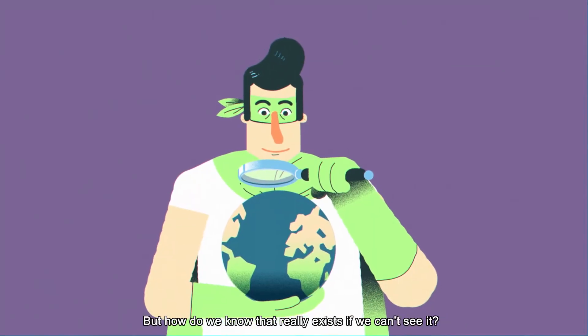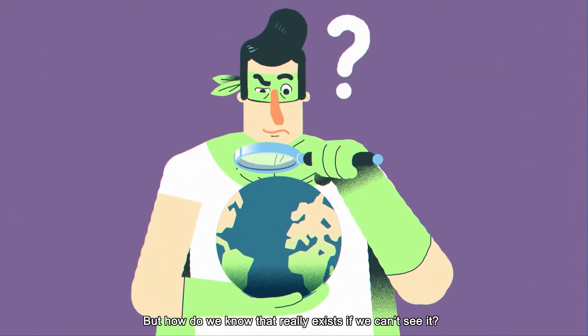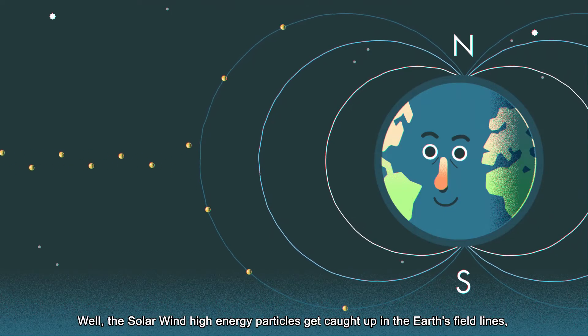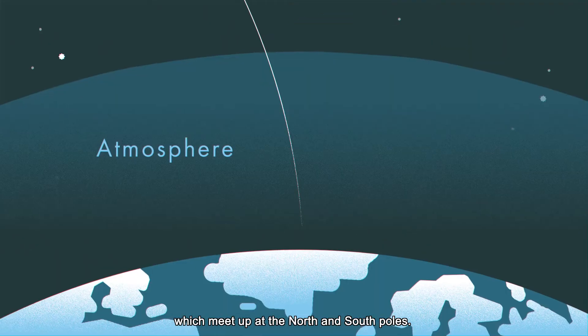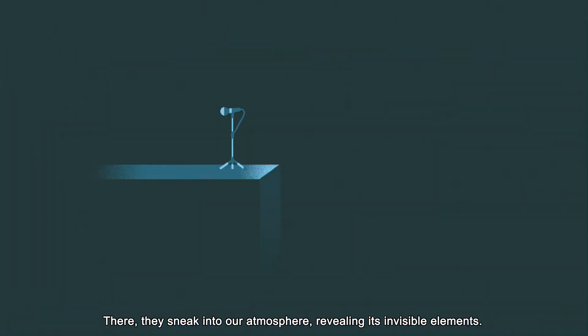But how do we know that really exists if we can't see it? Well, the solar wind high energy particles get caught up in the Earth's field lines, which meet up at the North and South Poles. There, they sneak into our atmosphere, revealing its invisible elements.